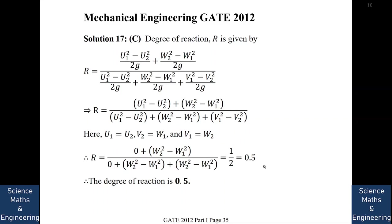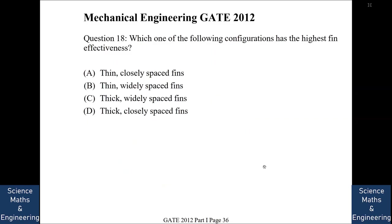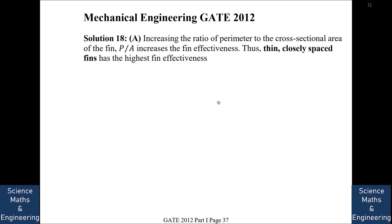Which configuration has the highest fin effectiveness? Options are thin closely spaced fins, thin widely spaced fins, thick widely spaced fins, or thick closely spaced fins. The answer is A — thin closely spaced fins. If we increase the ratio of perimeter to cross-sectional area of the fin, fin effectiveness increases, and thin closely spaced fins achieve this best.